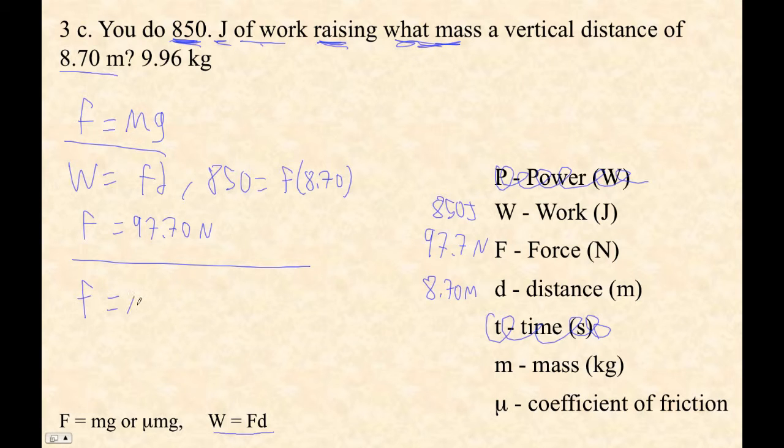So force is mg. So 97.70 is m times 9.8. And now we can just divide. So divide by 9.8, 9.969. So that would be 9.97 kilograms, roughly.